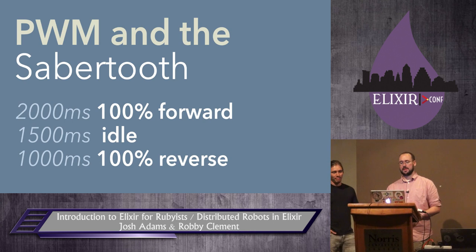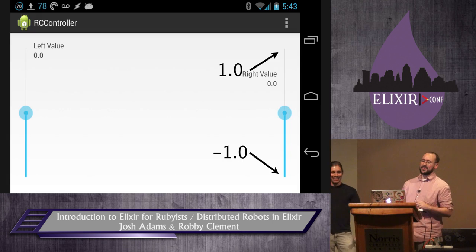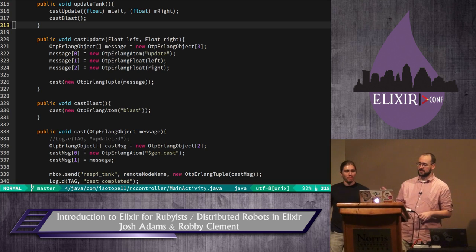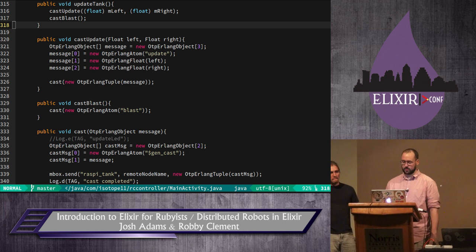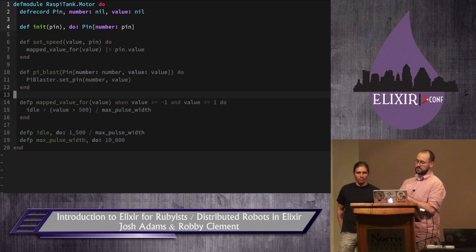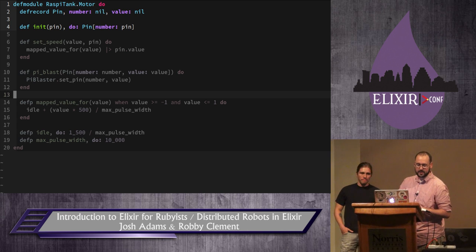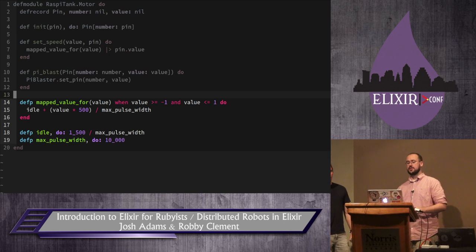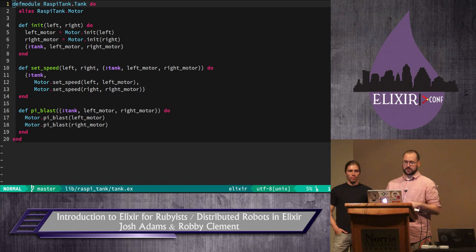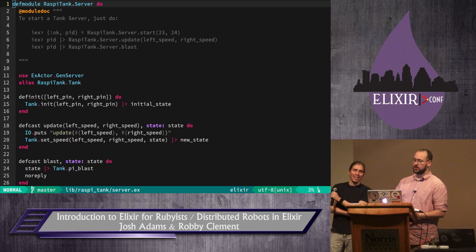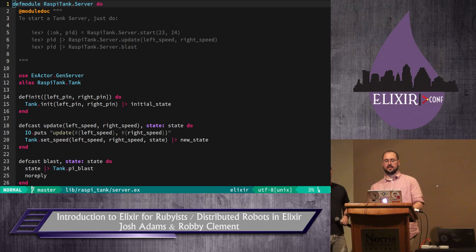The Sabertooth basically takes PWM logic signals. The Android interface has two sliders mapped from negative one to one — standard tank steering controls. Here's the Java code that generates JInterface calls to send the appropriate messages — very similar to what you saw before. On the Elixir side, here's a motor module representing a single motor, taking the motor's pin when initializing it. It supports a set_speed function that maps the value to the appropriate pulse width modulation levels. Here's our tank module controlling two motors, and then a quick GenServer wrapped around the tank module — this is what our JInterface is ultimately sending messages to, using the tank as its state with a couple of casts.